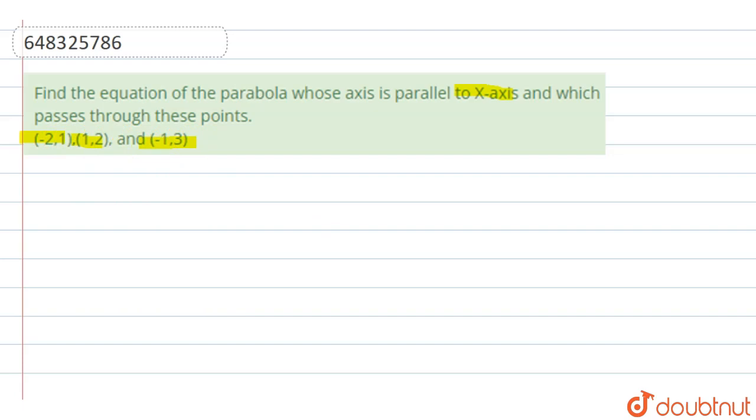Now equation of parabola whose axis is parallel to x axis is given by y equal to ax square plus bx plus c. Now to find the equation we have to find the value of a, b and c.